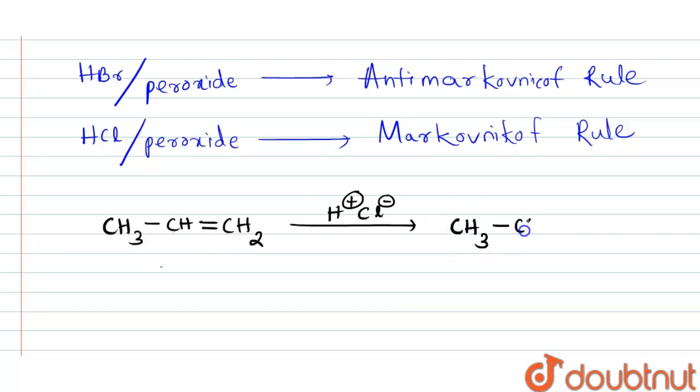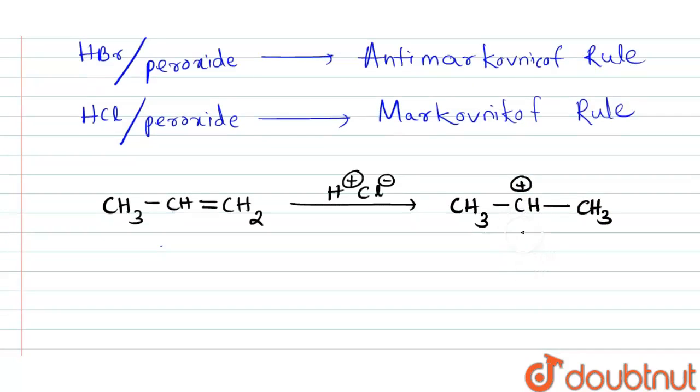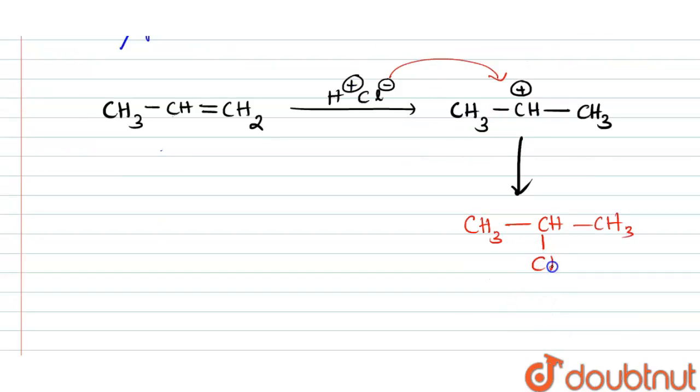Then Cl- from the reaction medium will be joined to this carbon atom. Hence our product will be CH3-CH(Cl)-CH3.